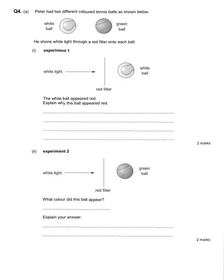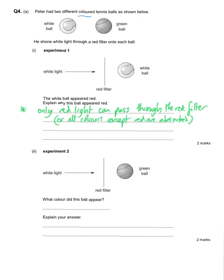This next question is about colours of light. We have two balls — a white ball and a green ball. White light is shone through a red filter onto the white ball, and the white ball appears red. White light is all colours combined, but red filters only let red light through — they absorb all other colours. So only red light passes through the filter, and since white objects reflect all the light, the red light reflects off the white ball to somebody's eye, which detects it as red.